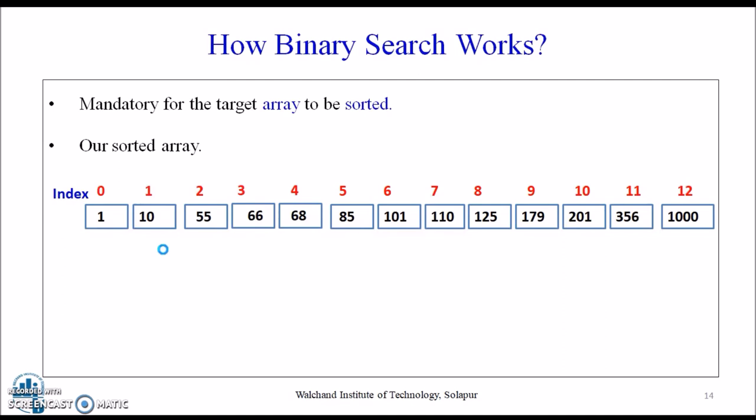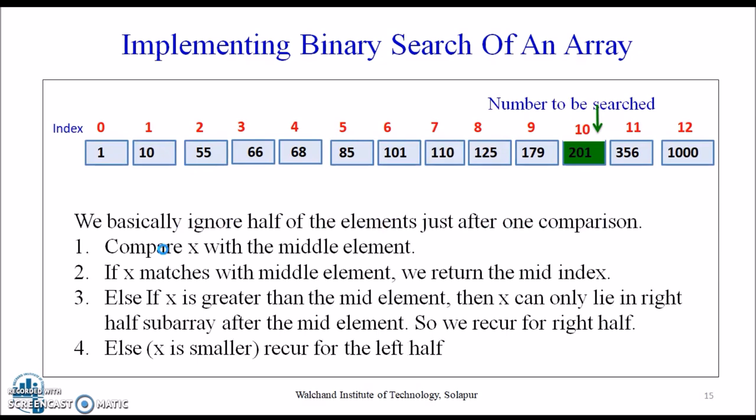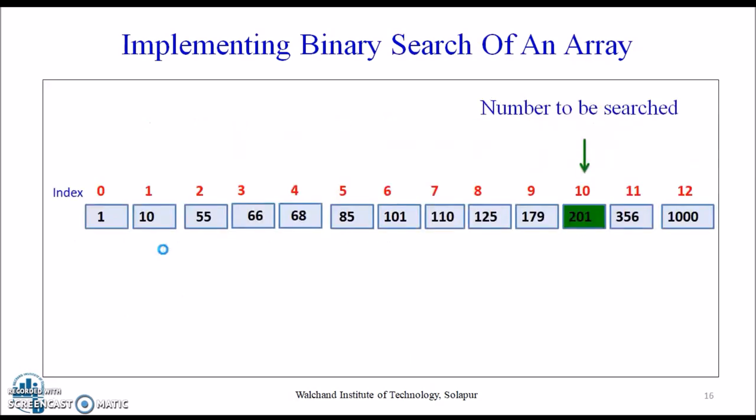The following is our sorted array and let us assume that we want to search the location of value 201 using binary search. First we shall determine half of the array by using the formula: low is the leftmost element and high is the rightmost element in the given sorted array.